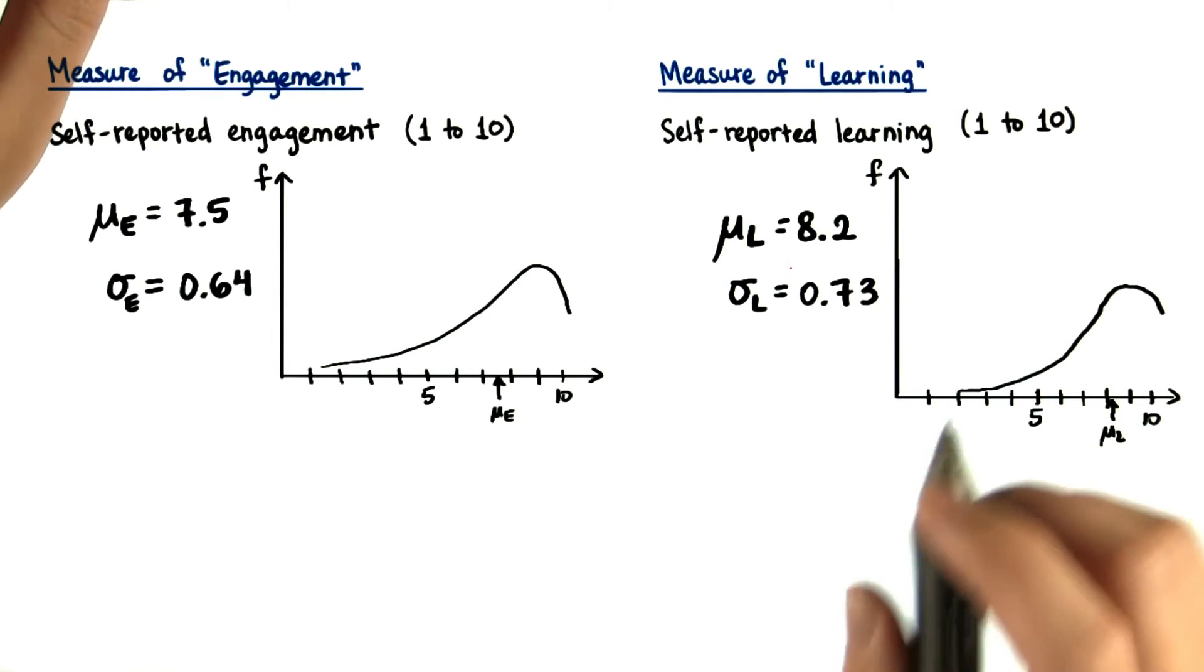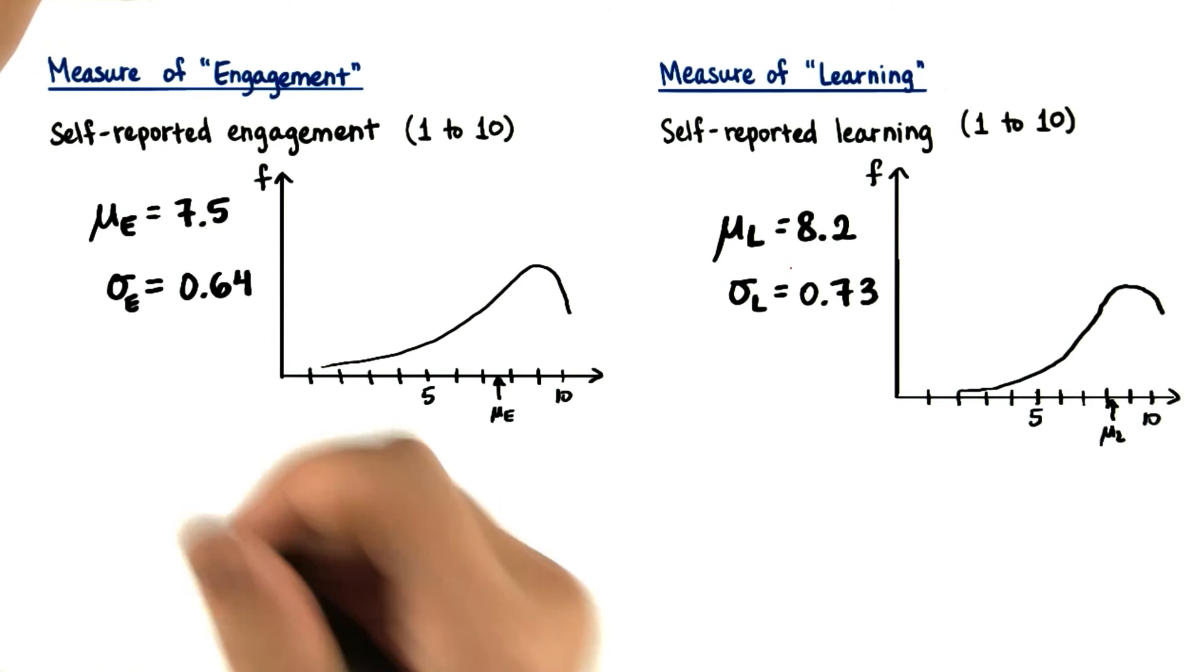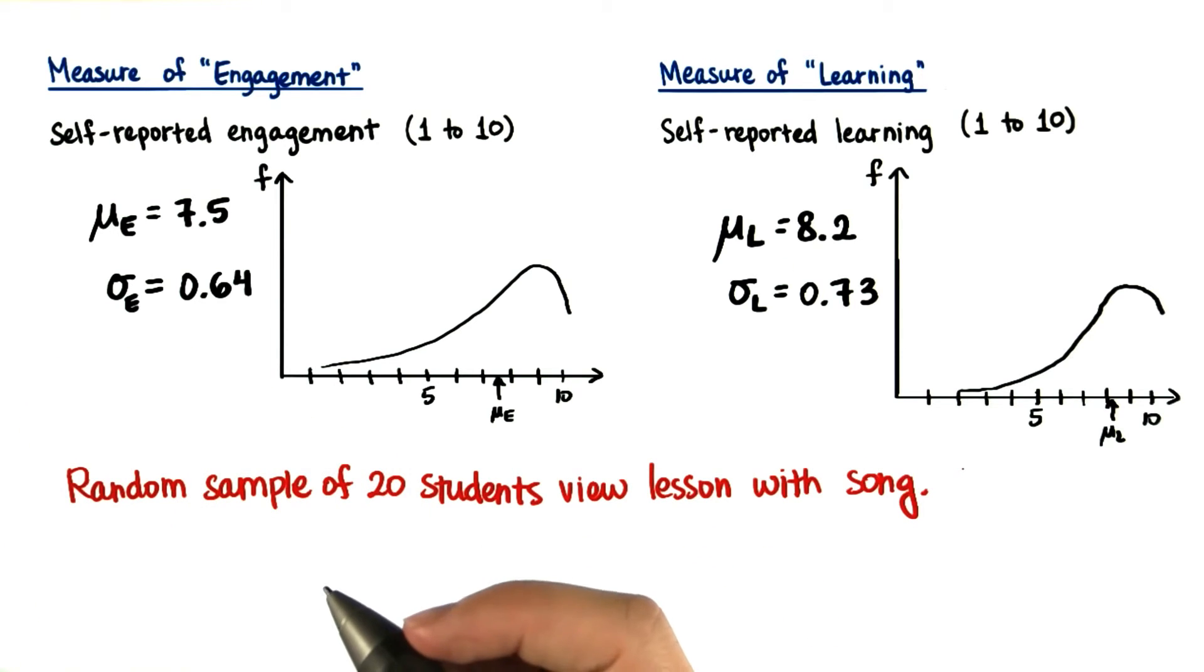I'm just going to give this lesson to a random sample of 20 students. Then I have them anonymously take the same poll you just did. Let's say we get the following sample means.